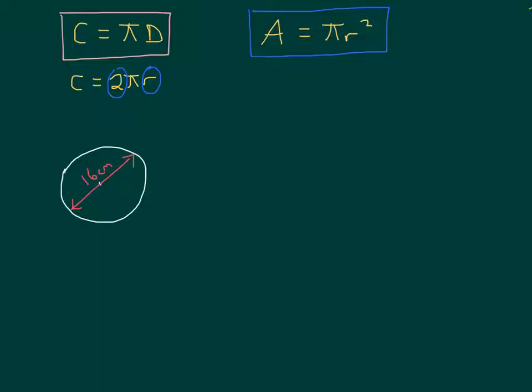Okay. Let's see how we got on. So let's start with the circumference. Pi d or 2 pi r doesn't matter. Circumference equals pi times... Now, we can just use 16 because 16 is the diameter of this circle. And if you put that in your calculator and then round it. Well, let's write it out first, actually. It's 50.26548246. So I'd round that to one decimal place. That would be 50.3 centimetres.